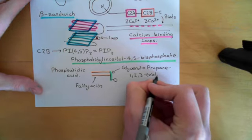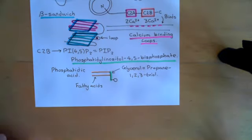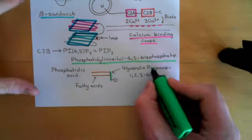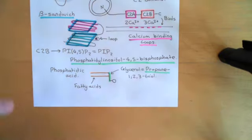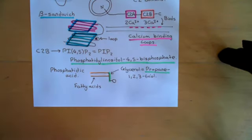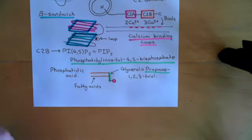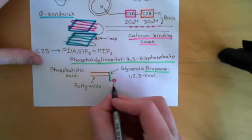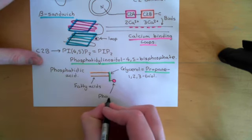Although propane-1,2,3-triol is more of a mouthful than glycerol, it's a more useful name in that it tells us exactly what we're dealing with — a three-carbon molecule where you have alcohol groups coming off the first, the second, and the third carbons. Then of the alcohol group that comes off the third carbon, we've attached a phosphate group.